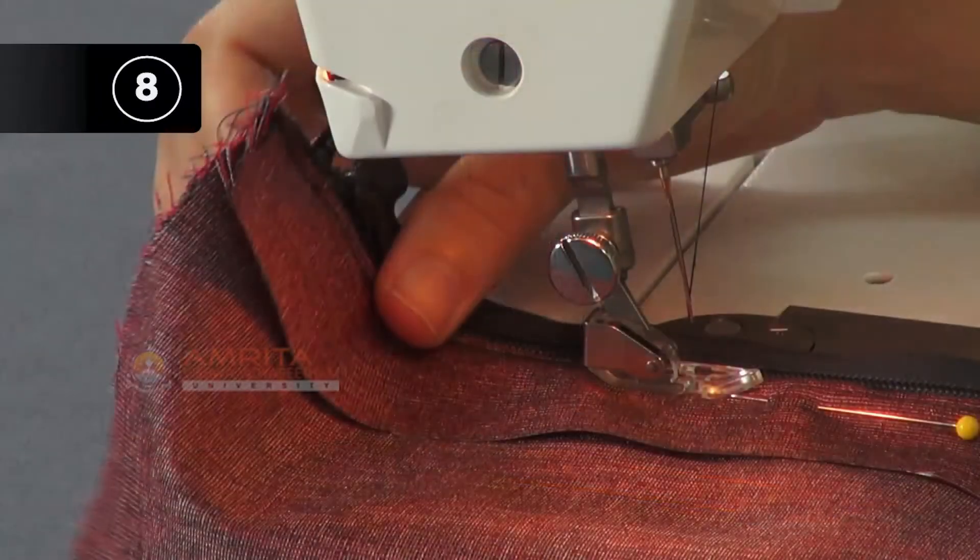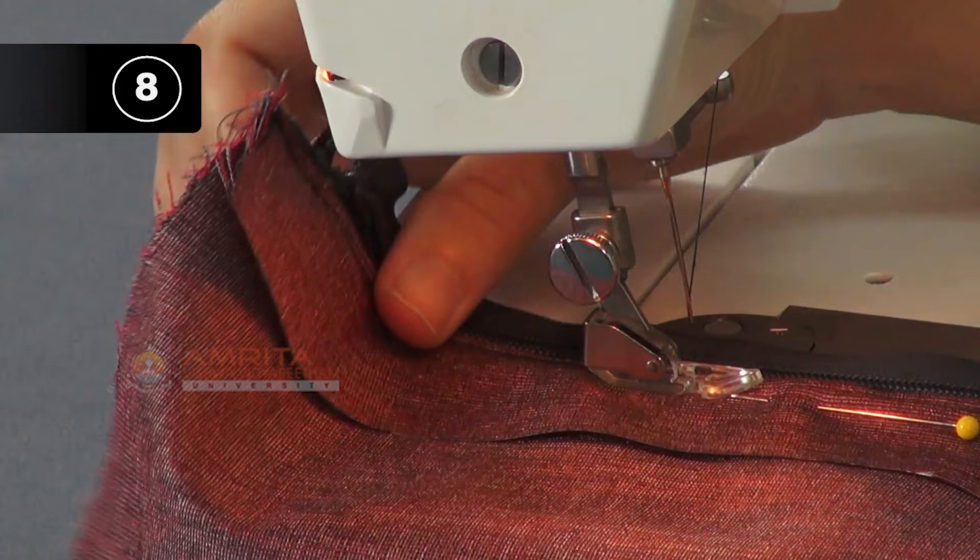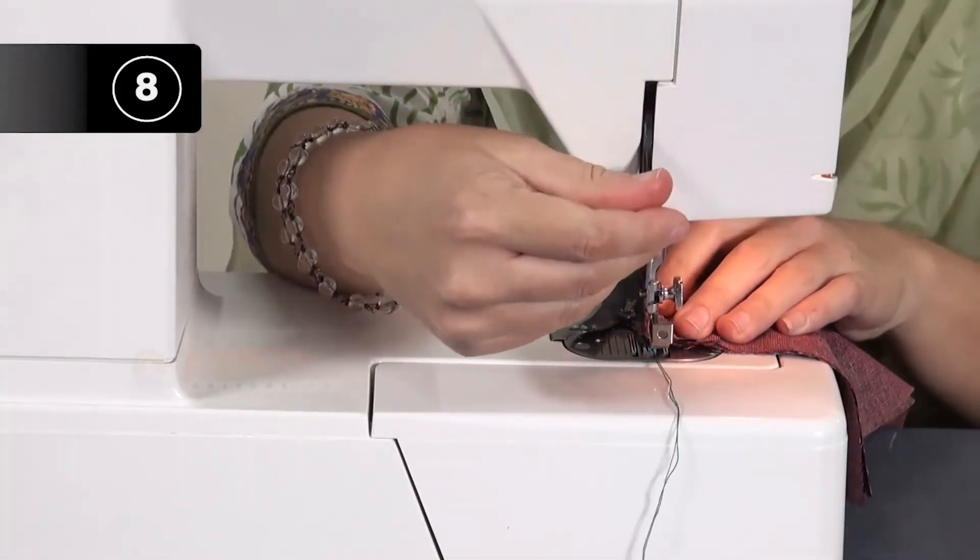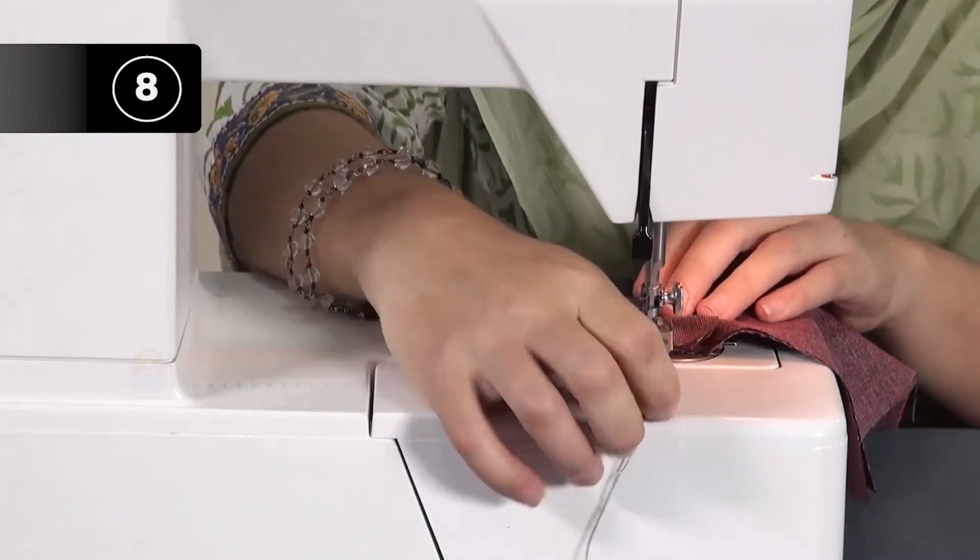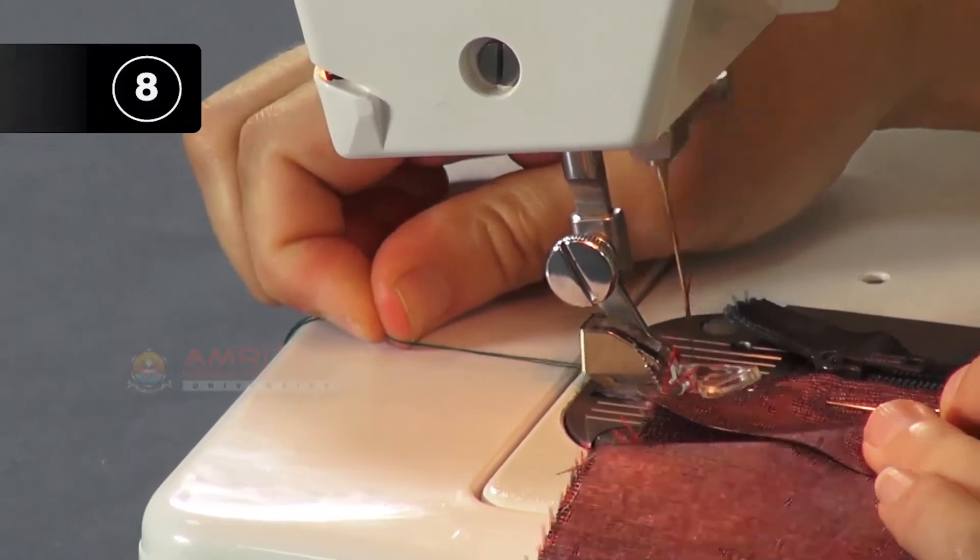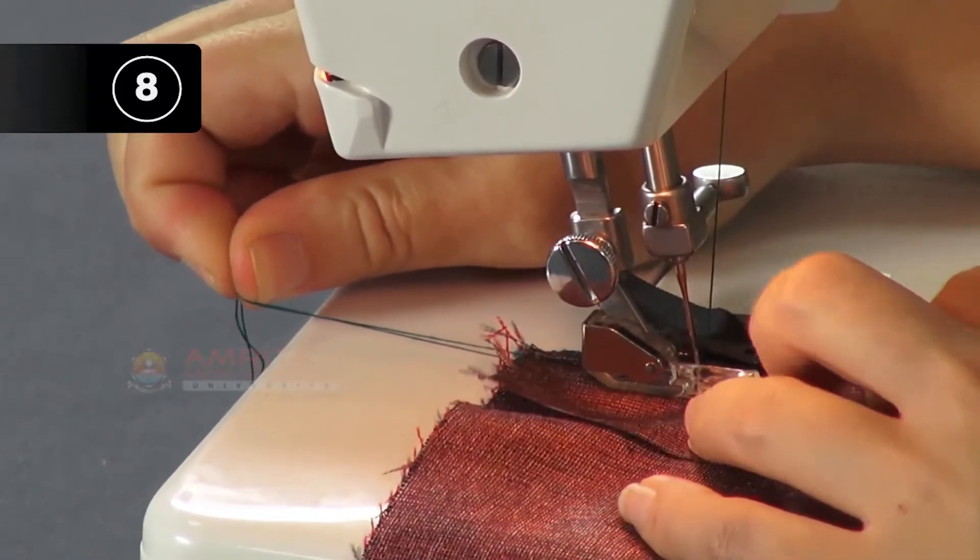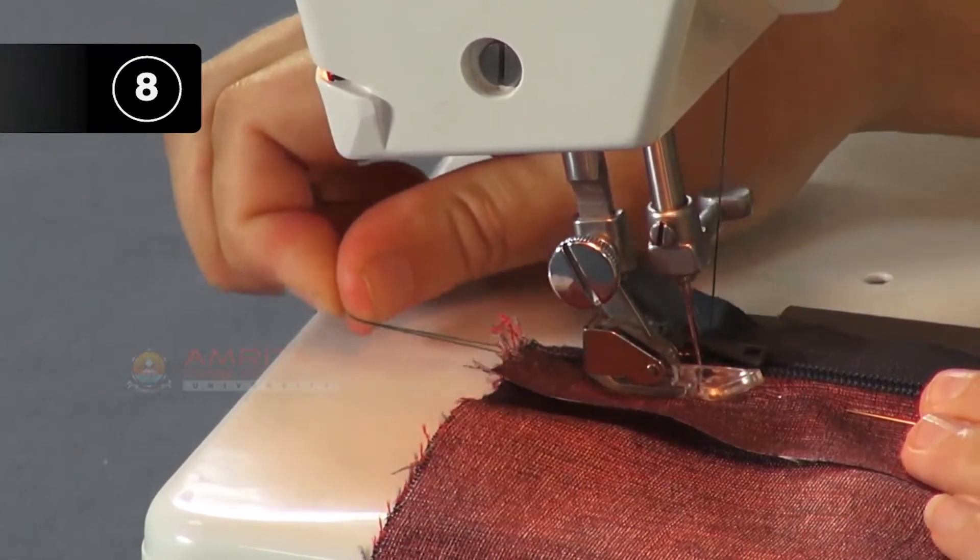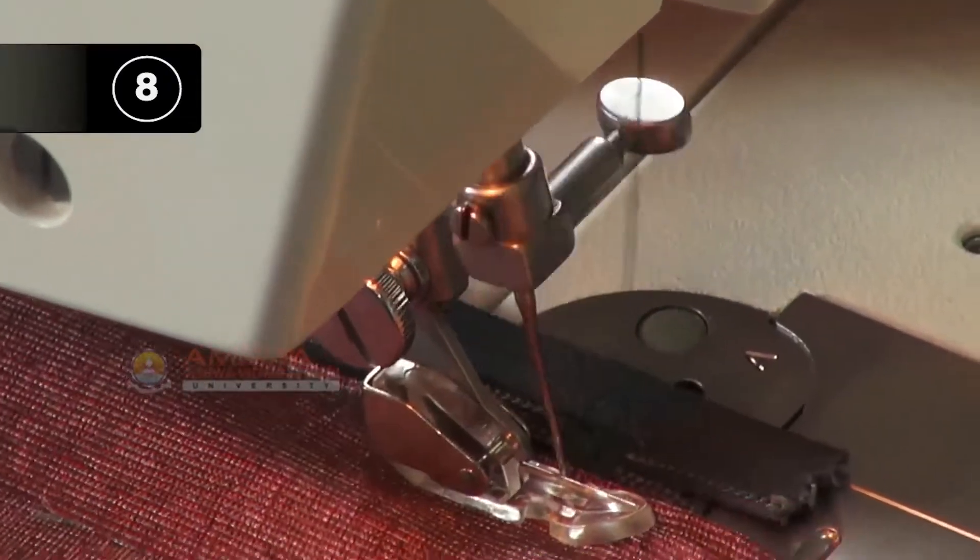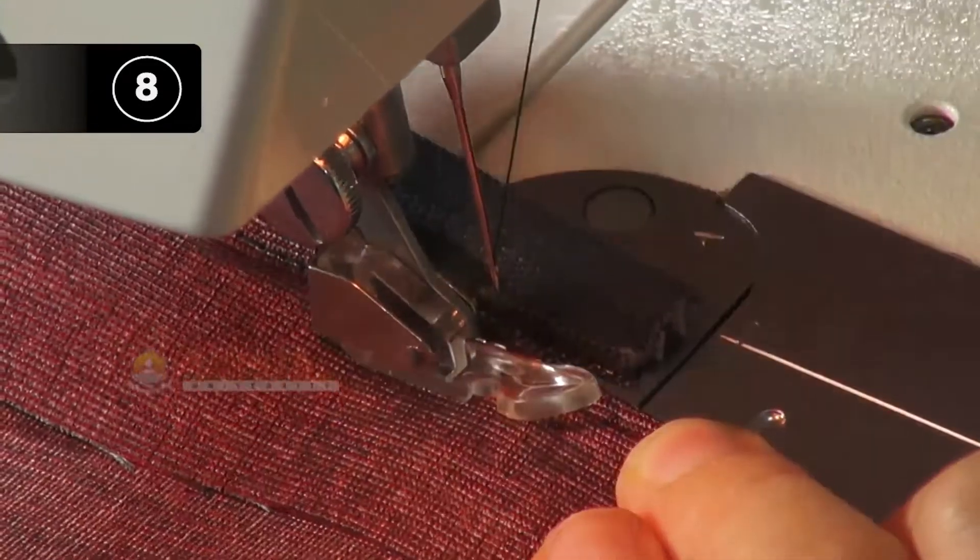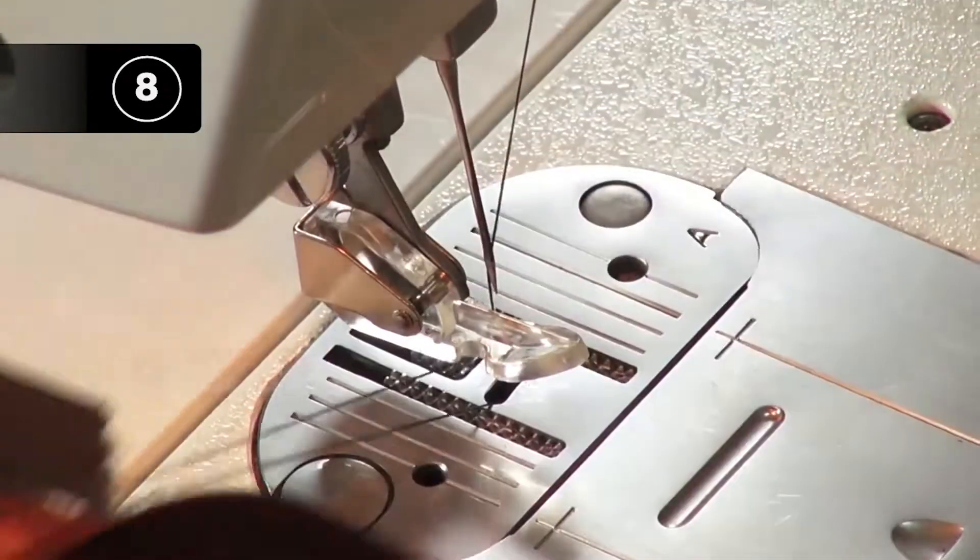Step 8: Stitch close to zipper teeth. Stitch close to the zipper teeth along the fold. Remove pins as you sew. When you finish sewing, snip the threads.